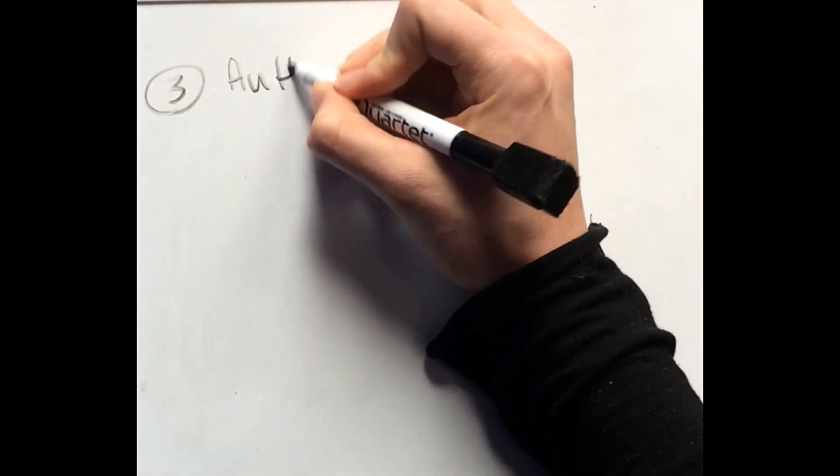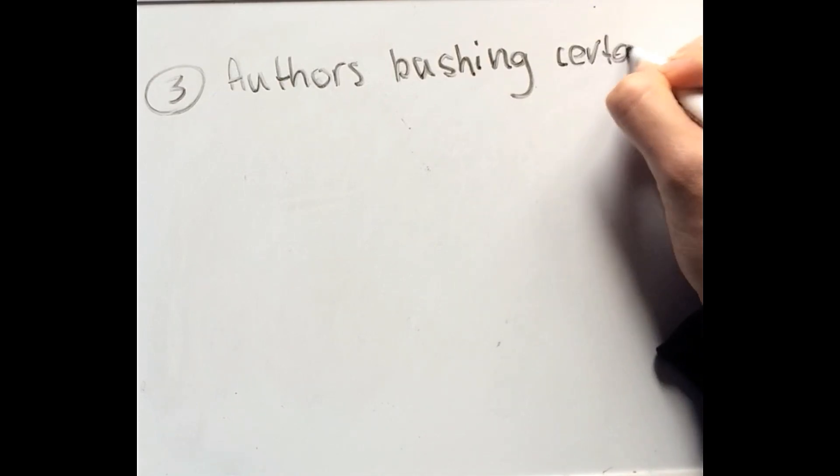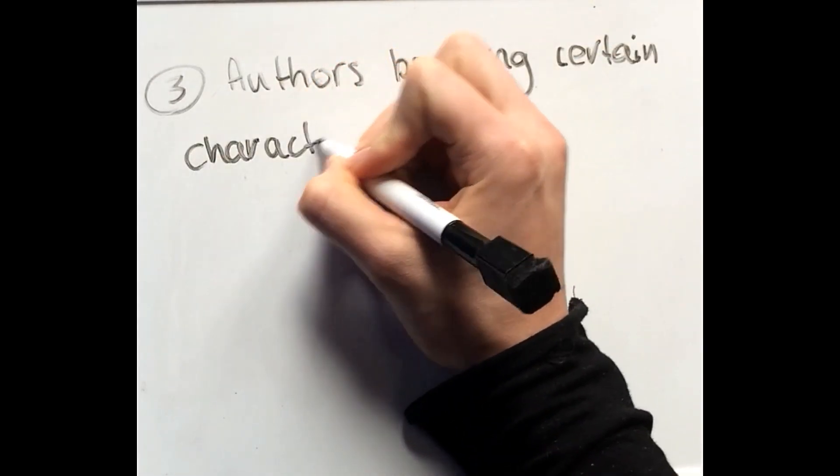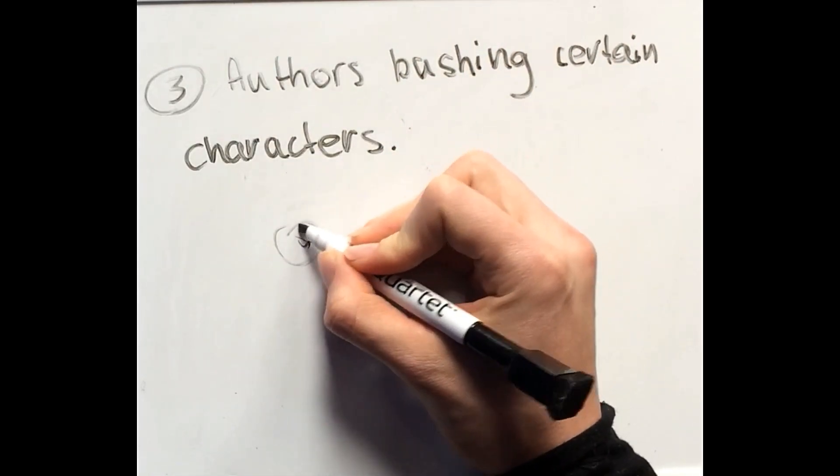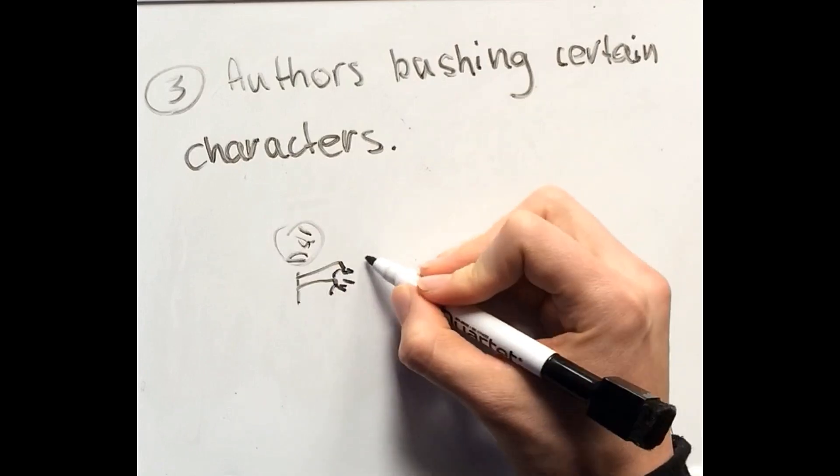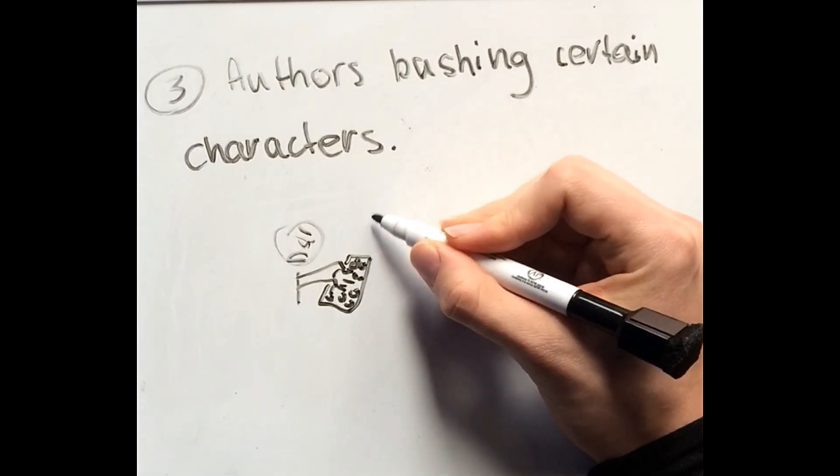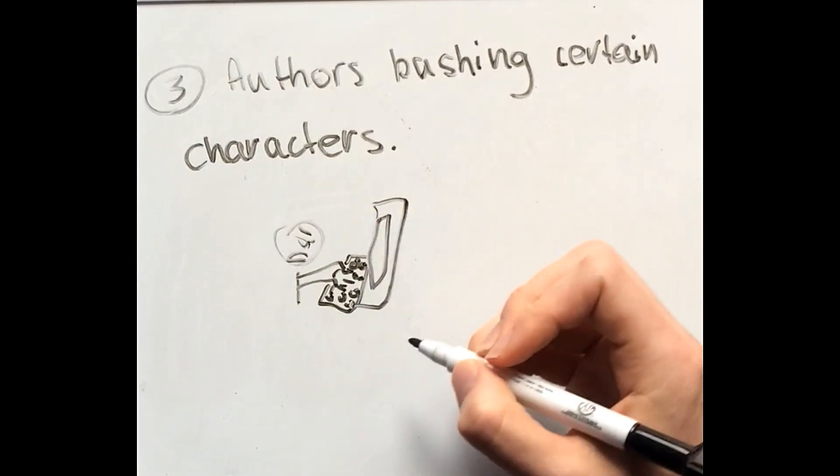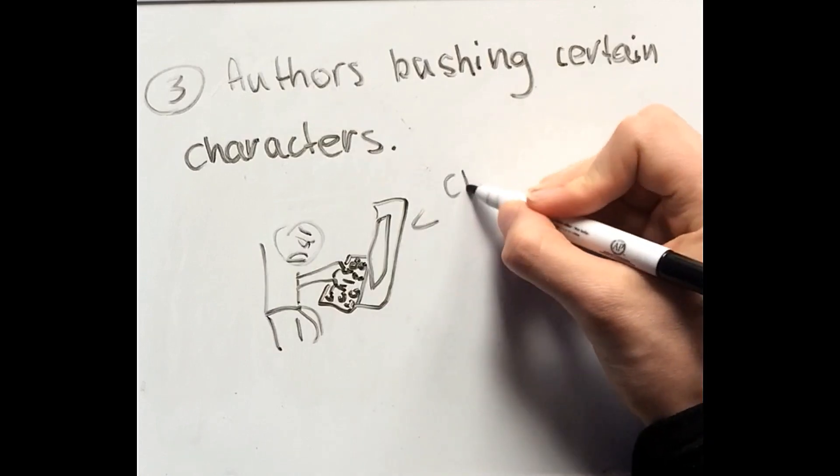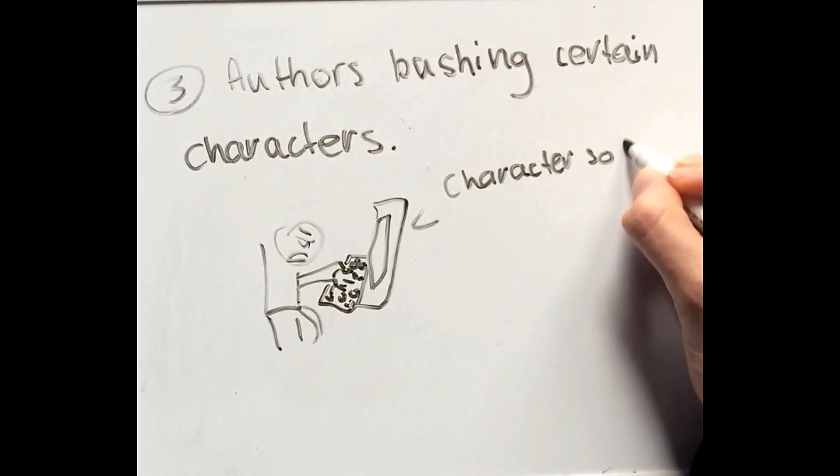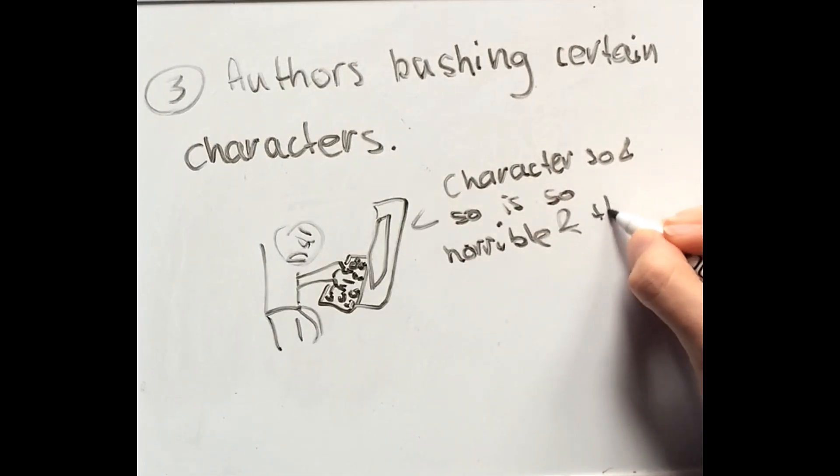And then at number three we have the authors bashing characters. This really does annoy the crap out of me because my problem with this one is that you can tell when an author clearly has beef with a character. Some authors have weird personal vendettas against certain characters and they will write them horribly out of character. They'll take a character's bad traits and just magnify that by 10 or times 100, and they almost write them like borderline villains sometimes. They get humiliated, they're hated by everyone by the end of the story.